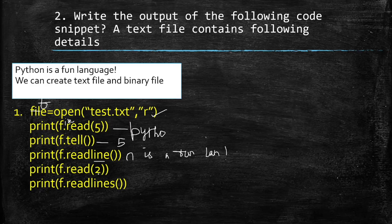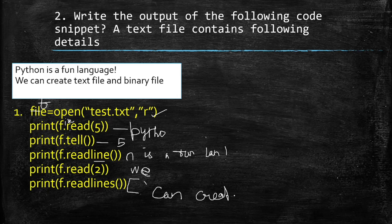Next, f.read(2) — it moves to the next line and reads two characters, so the output is 'We'. Then print(f.readlines()) — readlines stores the remaining content in the form of a list, reading until 'binary file', completing the second line as a list element.